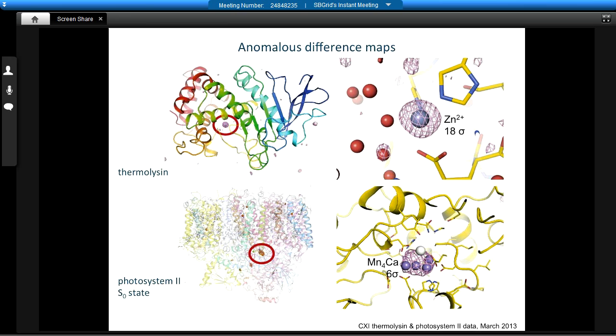So a couple of slides in conclusion on results for thermolysin. We can actually measure an anomalous signal. And if we calculate a difference Fourier map, the anomalous peak height is 18 sigma on the zinc atom. That's fairly respectable. We can locate the zinc in a Patterson map, but the signal isn't strong enough for phasing at present. So hopefully with better processing techniques, this signal will be enhanced. And it is a difficult phasing problem, even on a synchrotron, but this is kind of where we're headed. We want to be aiming for this target.